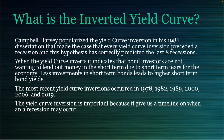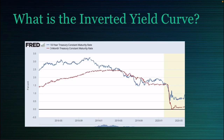The yield curve inversion is important because it gives us a timeline on when a recession may occur. In this chart, you can see that the three-month treasury bond yield exceeds the 10-year treasury bond yield at a certain point — that is when the yield curve inverts. This is a signal of fear in the market, because typically the 10-year treasury bond will yield higher since they're lending out money for a longer period of time.